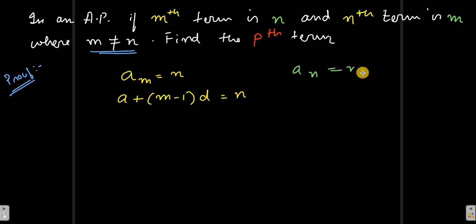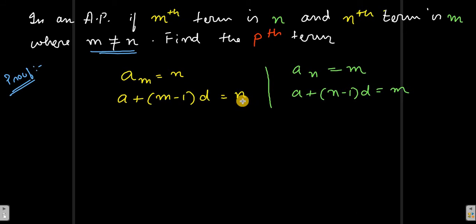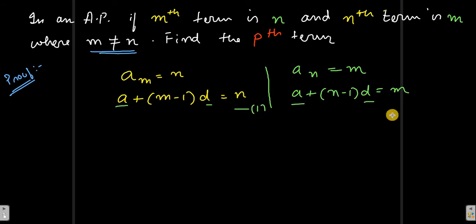Similarly, when a_n equals m, we can write it as a plus (n minus 1) into d equals m. The reason a and d are the same for both equations is that this is done for the same sequence. So a and d are the same for both a_m equals n and a_n equals m. Let's call these equation one and equation two.